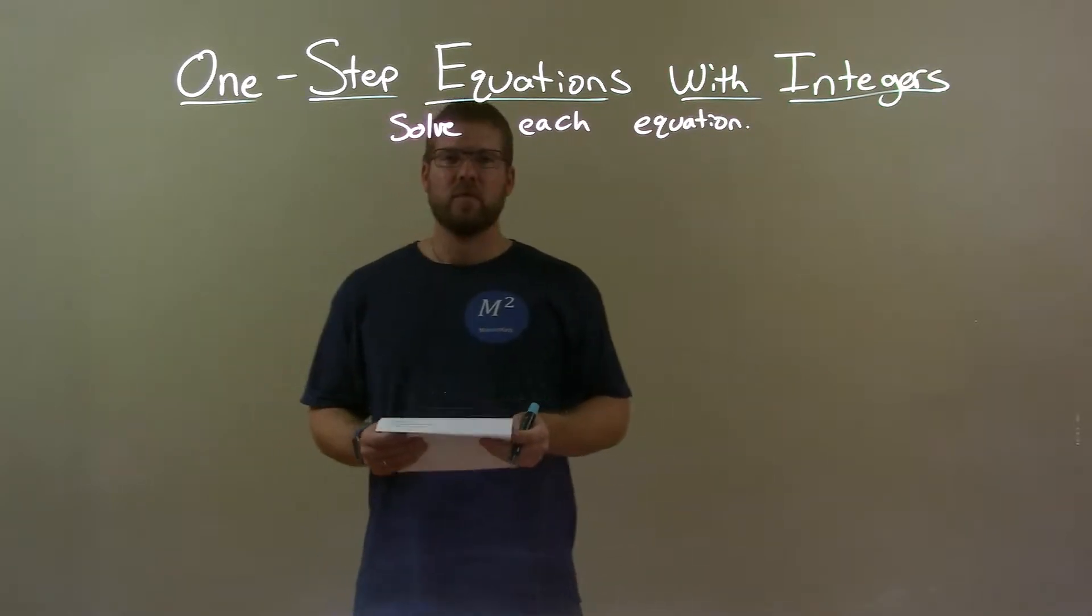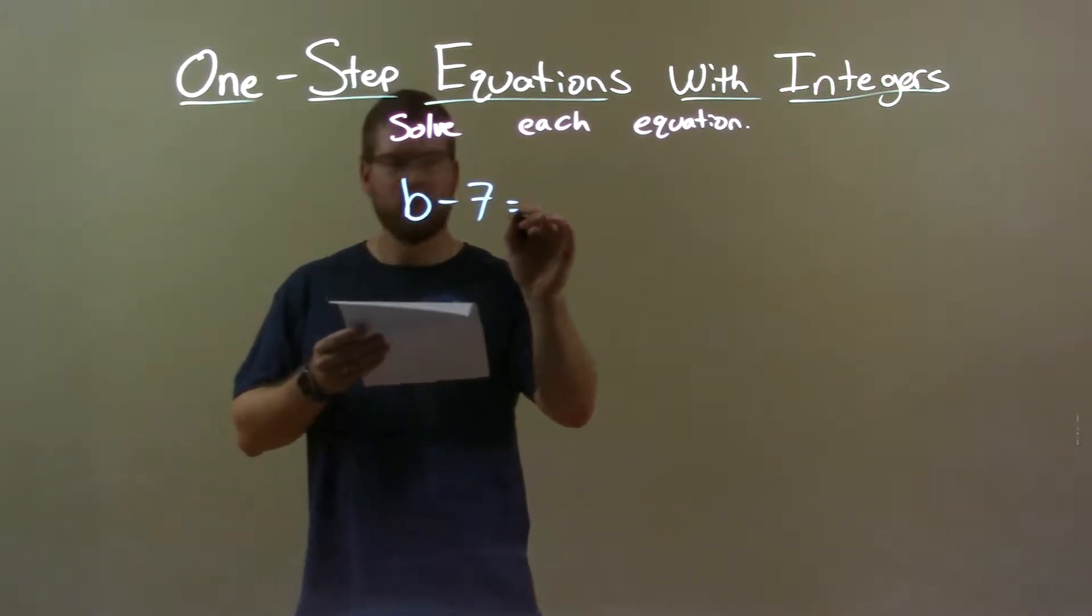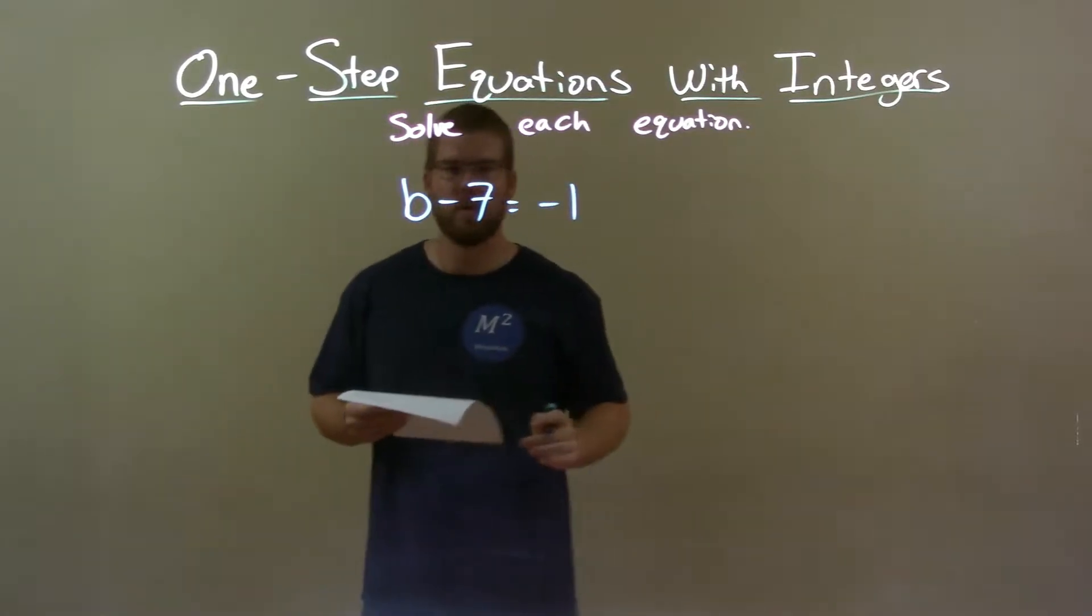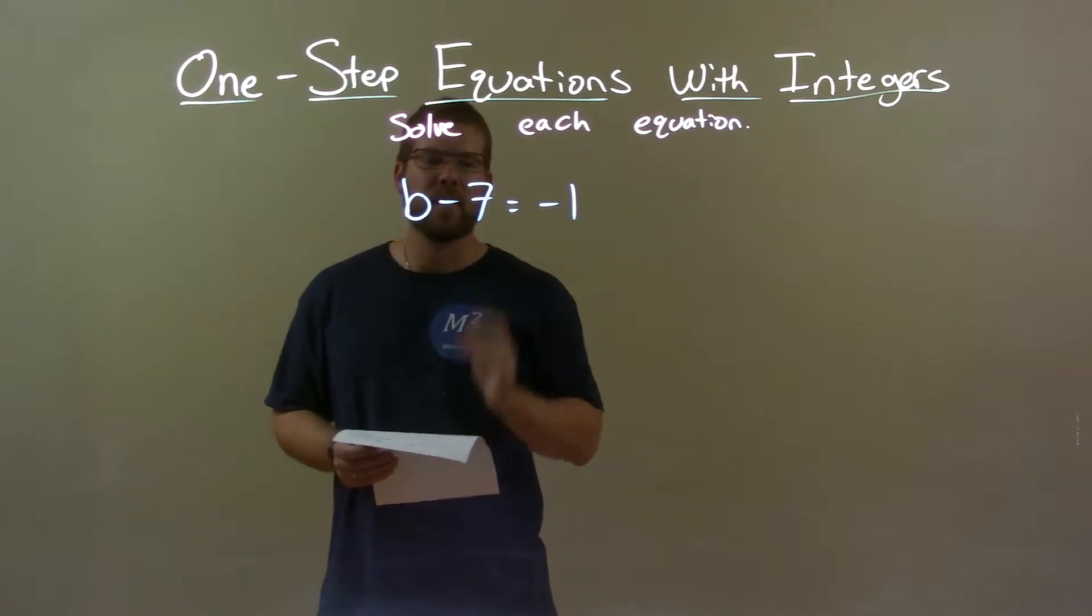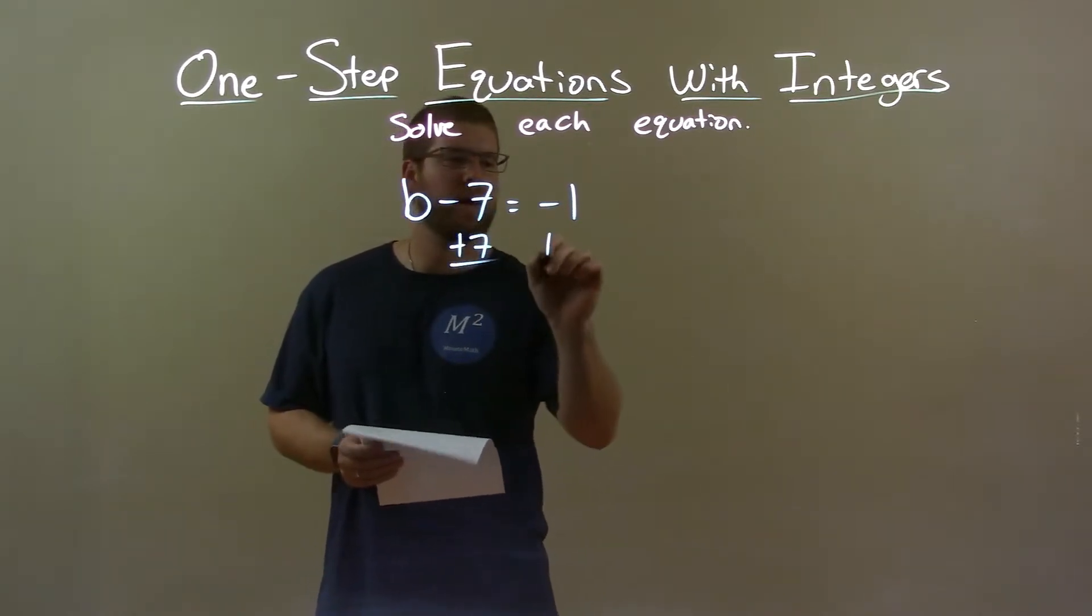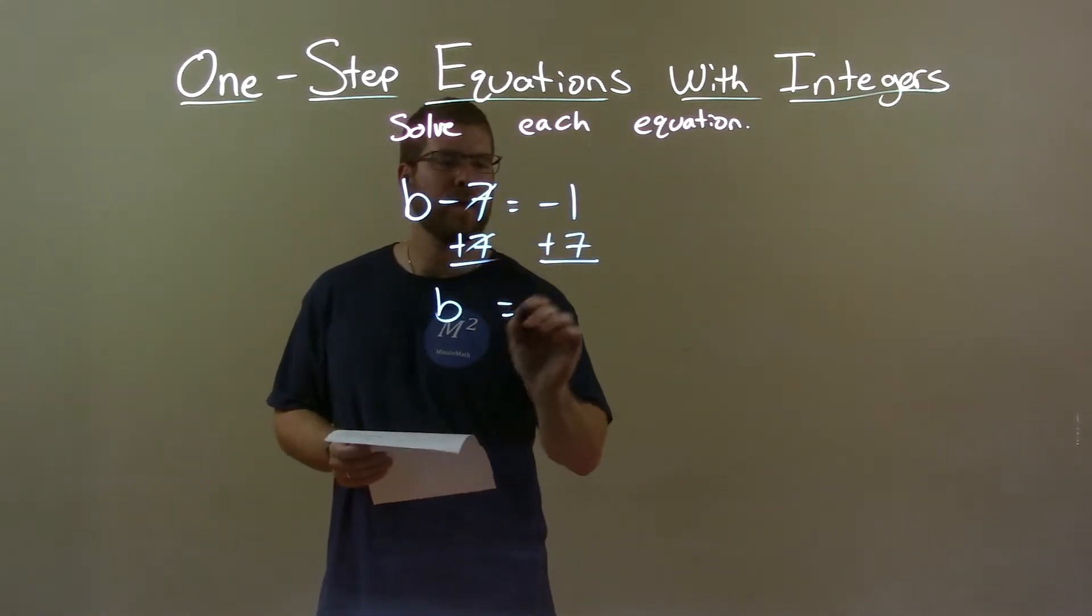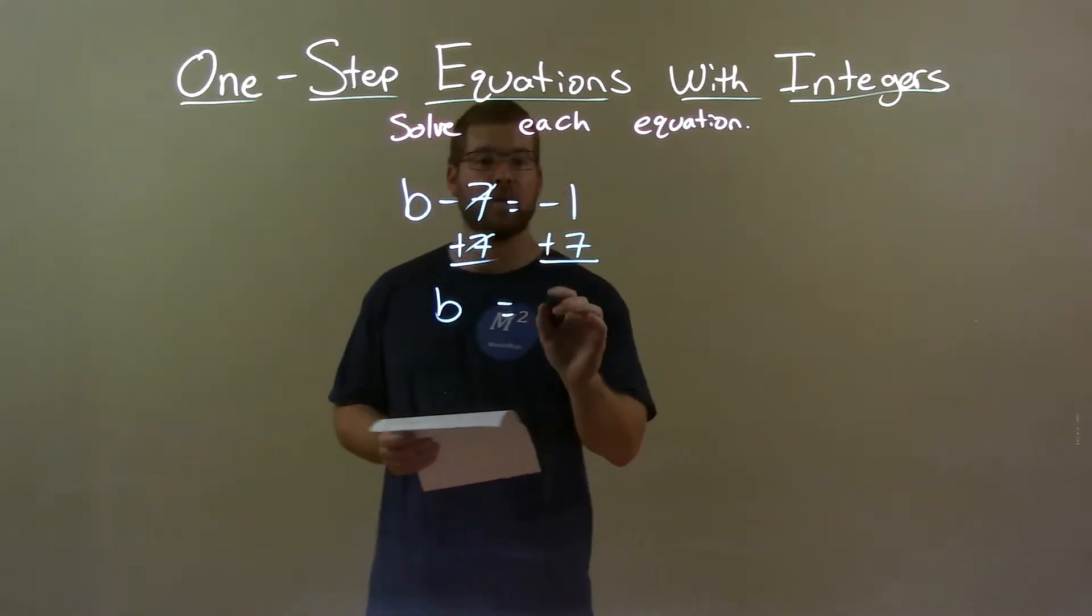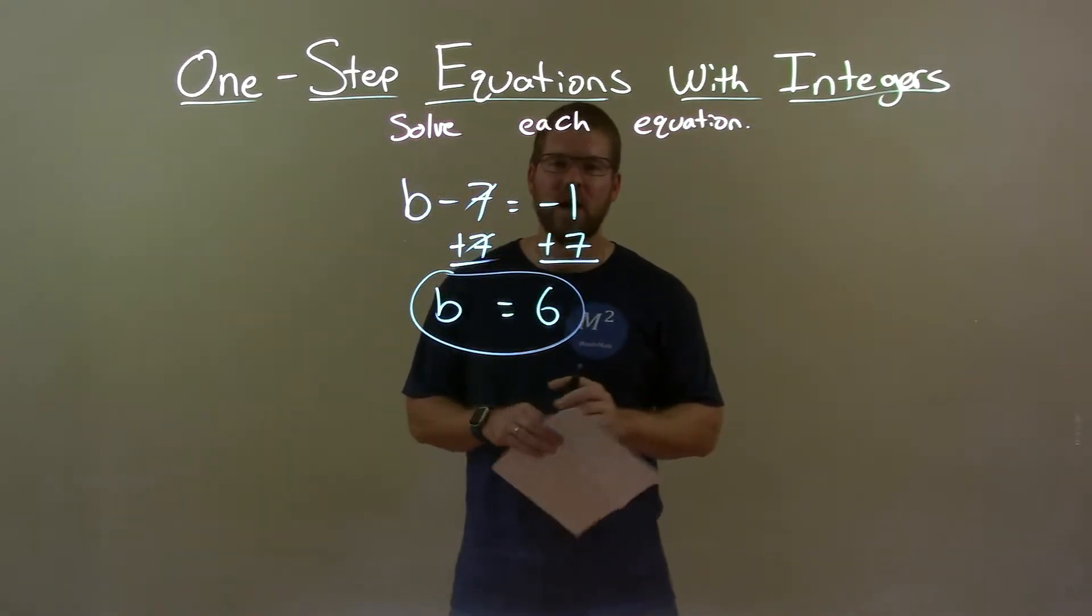If I was given this equation, b minus 7 equals negative 1, I want to get b by itself. I'm subtracting 7 next to it, so the opposite of subtraction is addition. If I add 7 to both sides, that gives me b by itself, the 7's cancel, and negative 1 plus 7 is positive 6. So my final answer is b equals positive 6.